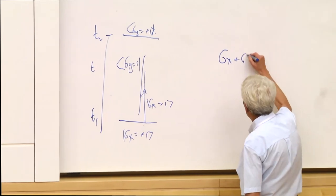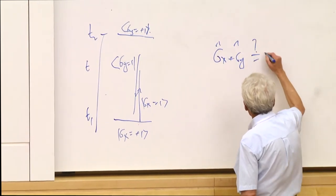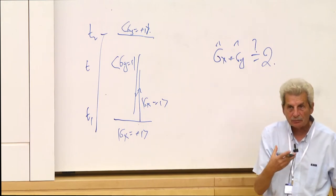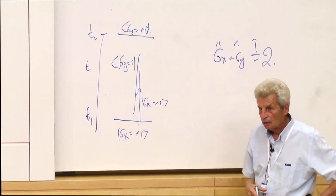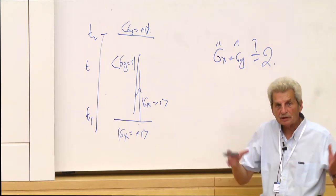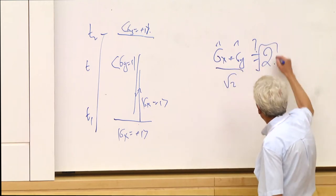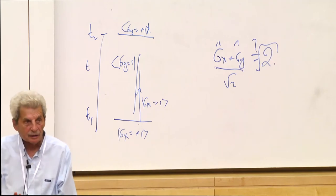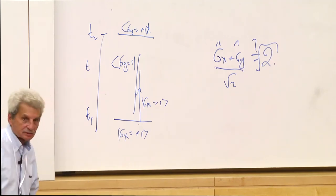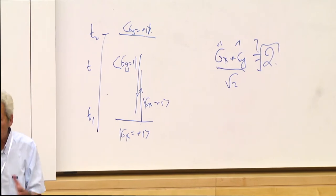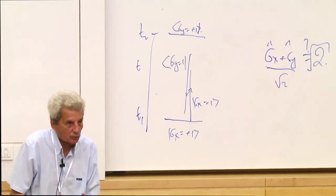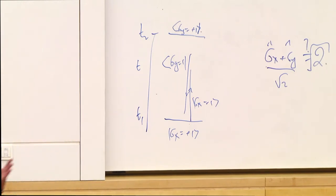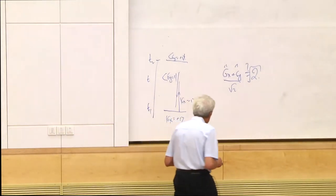What happens if I measure sigma_x + sigma_y? I get the answer 2, because if this is 1 and this is 1, the sum is 2 — so maybe I should get the answer 2 if I measure sigma_x + sigma_y in the middle. But the minute I think about it, I say no, that is not true, because if I divide by square root of 2, I know this is a spin component at 45 degrees in the x-y plane, which can only be +1 or −1 — it can never be square root of 2. So I was led astray by this picture, and maybe having two vectors is wrong. But I didn't give up.